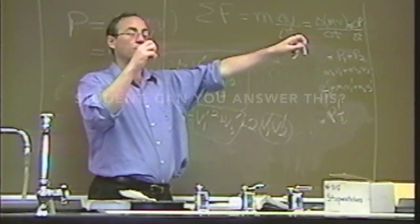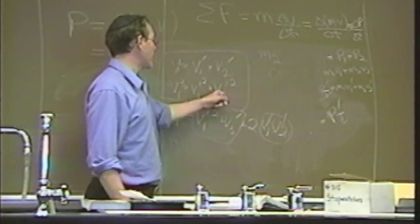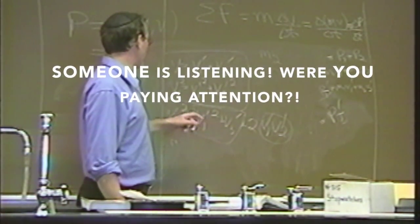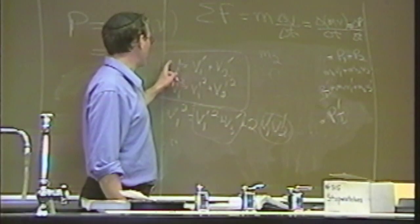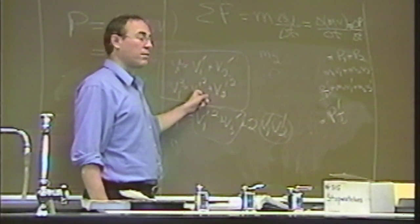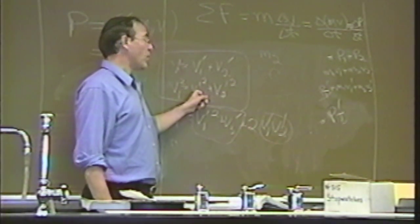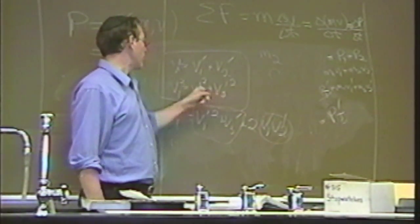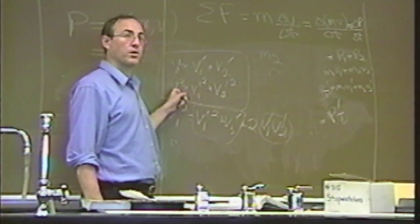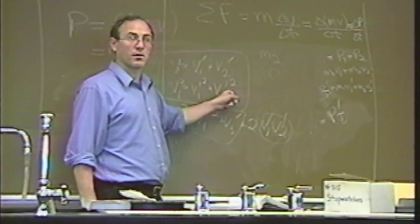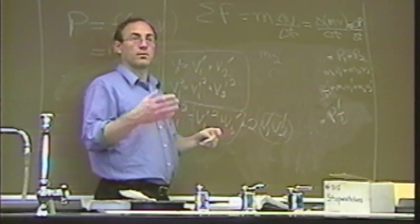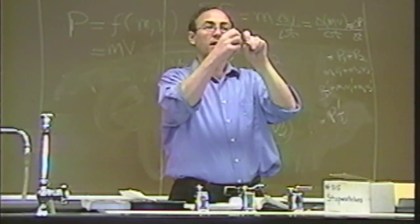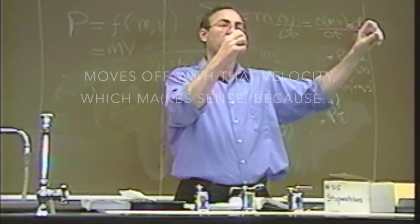Now we know V1 prime is zero. Plugging back into the momentum equation, V1 squared equals V2 prime squared, so V2 prime equals V1. In other words, the ball that was originally moving at velocity V stops completely, and the originally stationary ball moves off with exactly that same velocity V. When both masses are equal, the moving ball stops and transfers all its velocity to the other ball.